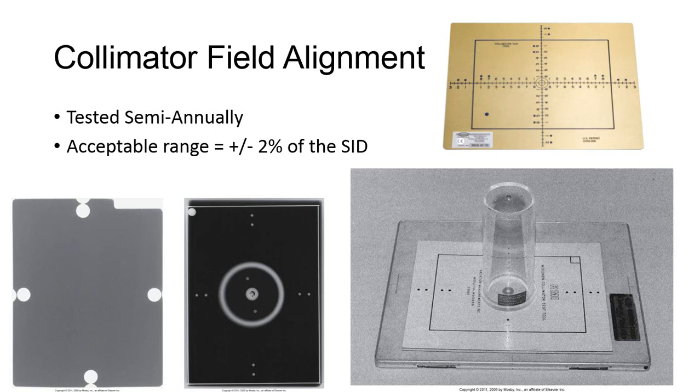Acceptance limits are ±2% of the SID. Most of these test tools are created for testing at a 40-inch SID, but in metric, that's 100 cm, a nice round number to know the value of 2% for acceptance limits. If the SID is 100 cm, then the radiation field on the image should be within 2 cm of the line that you collimated to.